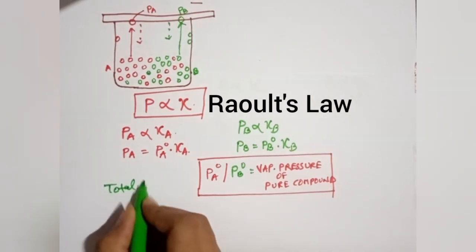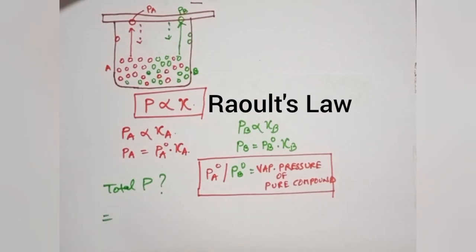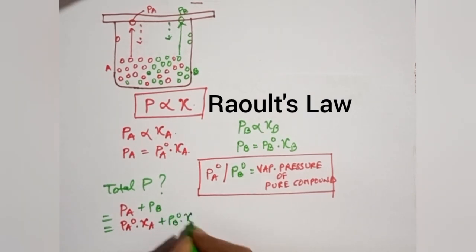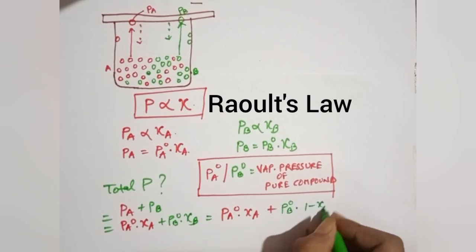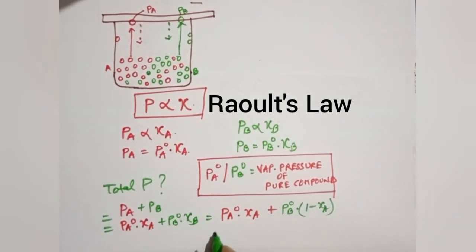Now let us see the total vapor pressure exerted by these two liquids on the walls. That will be the vapor pressure of A plus the vapor pressure of B. So P_total = PA + PB = P°A × XA + P°B × XB. Now the important concept: we will replace XB with (1 - XA). We have studied that mole fraction of a solution is 1, and we can replace the mole fraction of solvent by 1 minus mole fraction of solute. In this way, we can calculate the vapor pressure of volatile liquids in a solution.